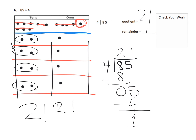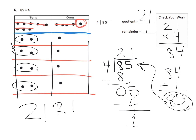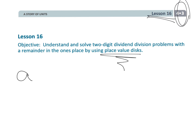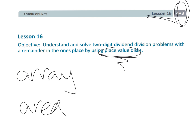Let's check to make sure. We do 21 times 4, which gives 84. Then we add in that extra remainder, and there's our 85. Since we ended up with 85, it means we probably did it correctly. That wraps up 4th grade module 3, lesson 16, where we used place value disks instead of the array model or area model. We still have some remainders, but we're moving towards the standard algorithm.